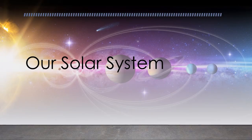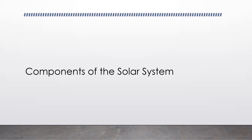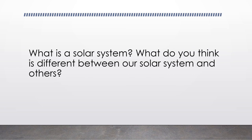Welcome to lecture 18, which is about our solar system. We're going to be talking about the inner and outer planets, planetoids, moons, the Oort Cloud, and the Kuiper Belt. We'll start with the components of the solar system and expand into other solar systems. While we're going through this lecture, think about what a solar system is, what your definition is, and what makes ours different from others.